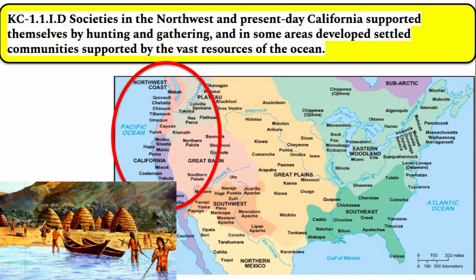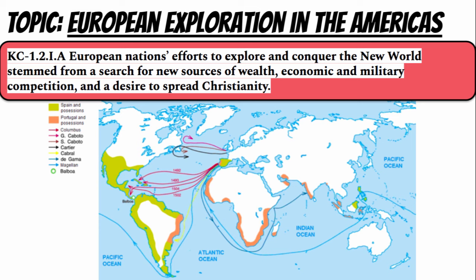Societies in the northwest and present-day California supported themselves by hunting and gathering, and in some areas developed settled communities supported by the vast resources of the ocean. One example would be the Chumash tribe that inhabited southern California. They practiced hunting, gathering, and fishing off the coast. And there's a variety of tribes in the Pacific Northwest which also adapted in this manner, taking advantage of the abundant resources found in the Pacific Ocean by utilizing dugout canoes and developing their own unique societies.